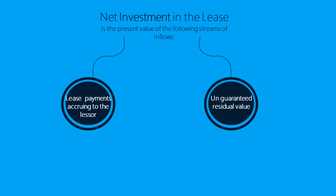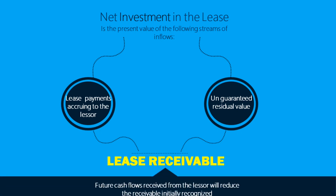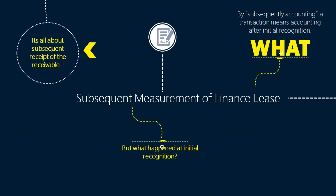Once we remind ourselves that net investment in the lease is the present value of what we expect to receive, it is only natural to think that these receivables will be received. As the future cash flows pour in, they would be credited in the receivables account we opened at initial recognition. Subsequent measurement of finance lease is all about recording the receipts of the receivable from the lessee.